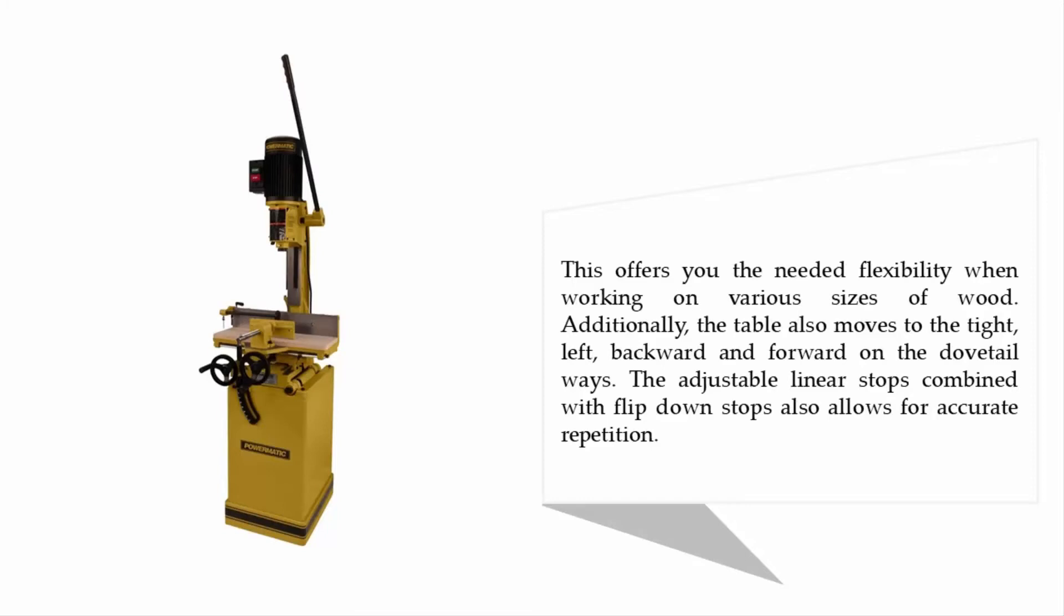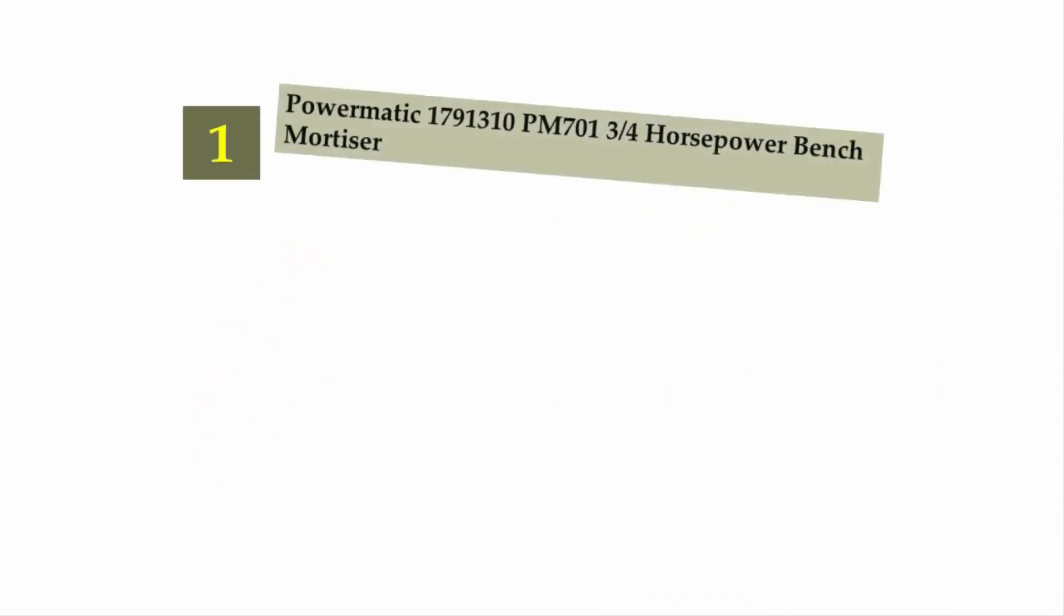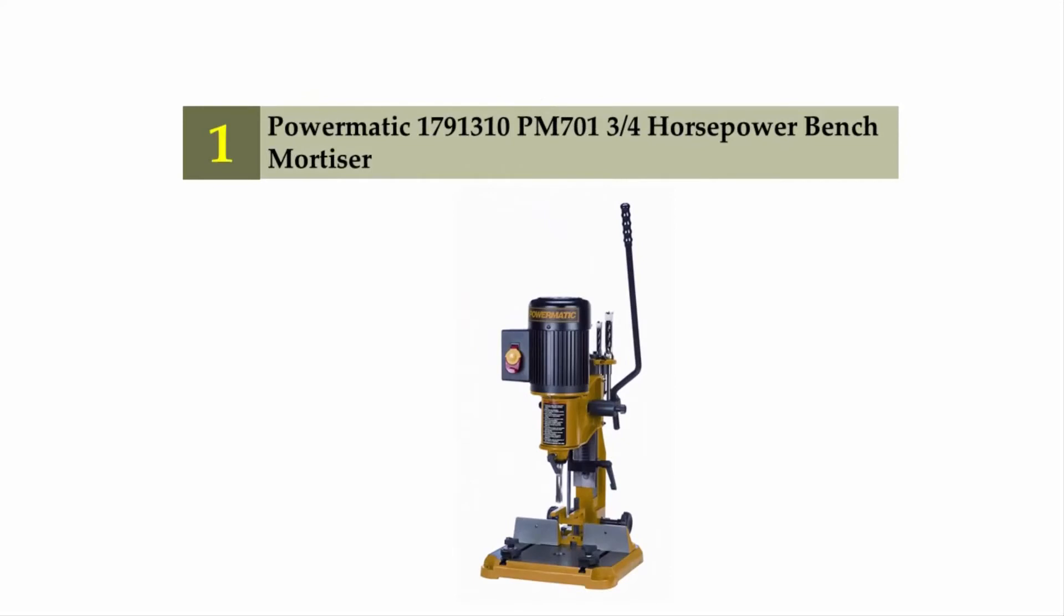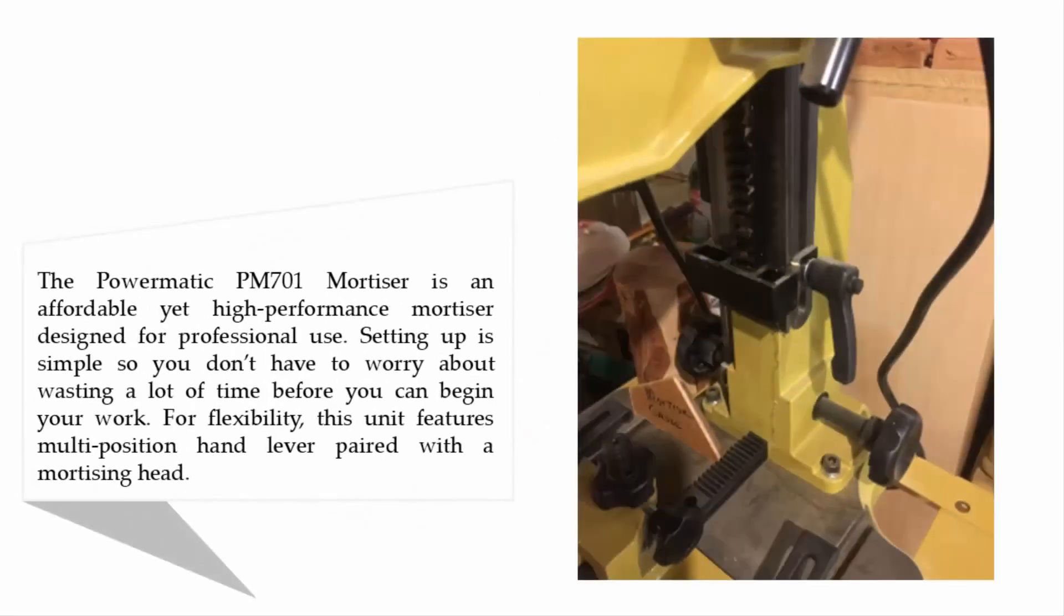Coming in at number one: Powermatic 1791310 PM7013 3/4 Horsepower Bench Mortiser. The Powermatic PM701 mortiser is an affordable yet high-performance mortiser designed for professional use. Setting up is simple, so you don't have to worry about wasting time before you can begin your work.